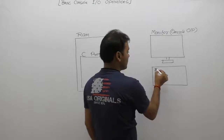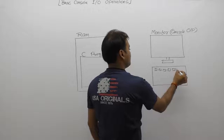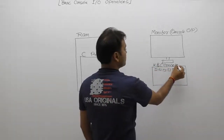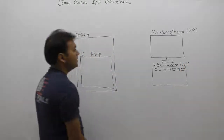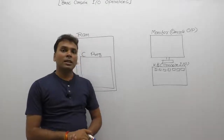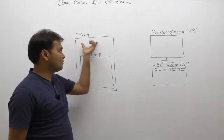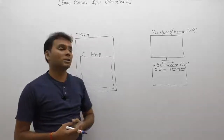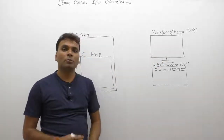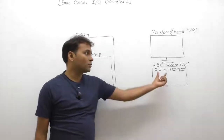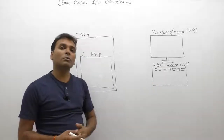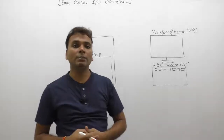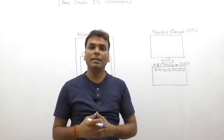The keyboard is a console input device. So finally, there are three types of devices involved in communication: the program resides in RAM memory, output is displayed on the monitor, and input data is read from the keyboard, which is the console input device.